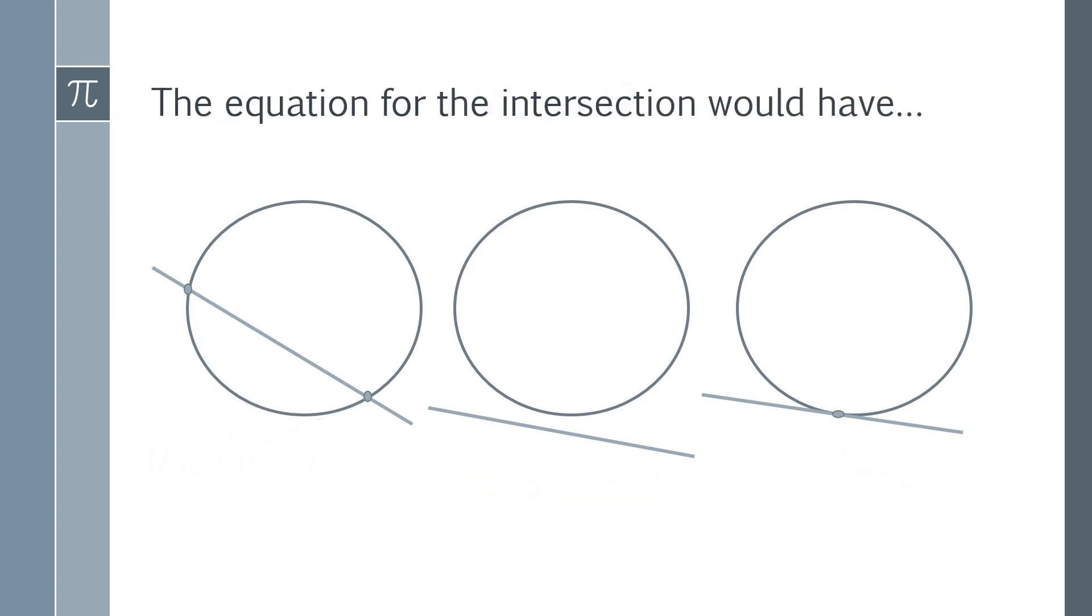Let's think about the equation of the intersection. If we could come up with some equation that we could find the points of intersection from, you would find that equation could have between none and two solutions. If we look at the far left-hand case, you would have two solutions because when you solve the intersection equation you're going to find the two points where it hits the circle.